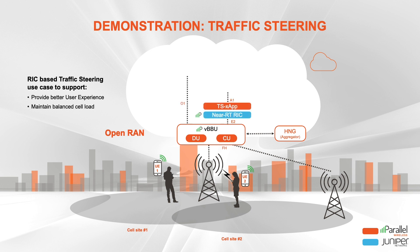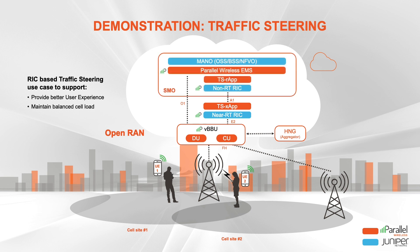The goal of the traffic steering use case is to avoid degradation of user experience due to network conditions by dynamically balancing the load across the network — for example, moving a user from a highly loaded cell to an adjacent lightly loaded cell. The diagram shows a partial view of the Parallel Wireless all-G Open RAN network, featuring a RAN Intelligent Controller framework from partner Juniper. The traffic steering R-App and X-App are developed by Parallel Wireless. Users UE1 and UE2 initially get a good signal in cell site one, but when more users arrive, all user experiences degrade.